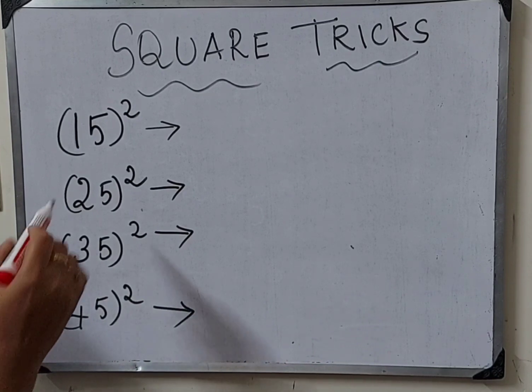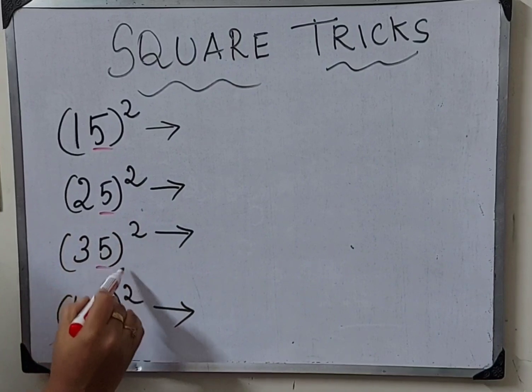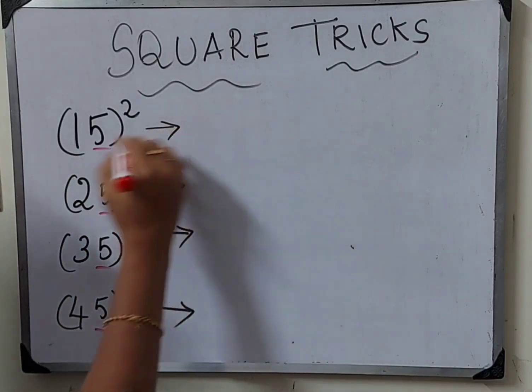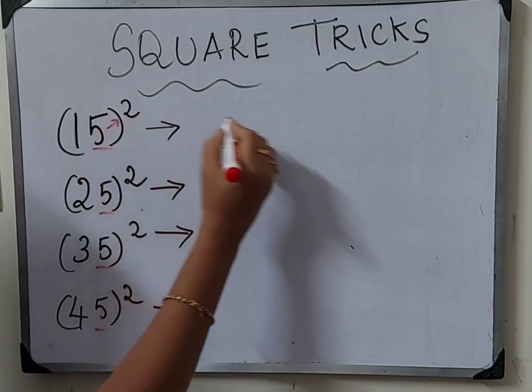We're going to look at square tricks for numbers ending with 5. Numbers like 15 square, 25 square, 35 square, 45 square. Two digit numbers ending with number 5. How do we find the square of these numbers? I'll show you a simple technique.